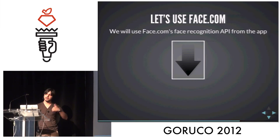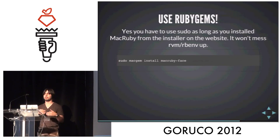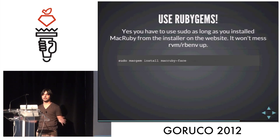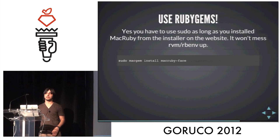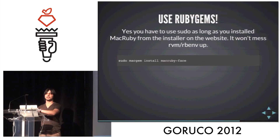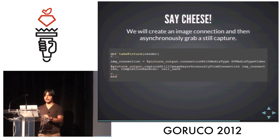So we're going to use face.com, which is what I used for my API at the hackathon. What it does is provide you an API to do recognition — you train against the data set, use your API keys, and say 'here's an image, who is this?' We're going to use a Ruby gem here, which is great about MacRuby — you can use Ruby gems, just be careful what they're doing underneath. Sometimes it won't work if it's system-level stuff, and you have to use sudo if you install from the installer. You pass the deployment arguments in Xcode and that's pretty much it.